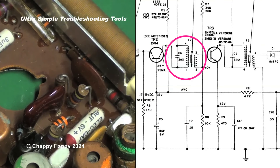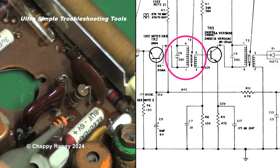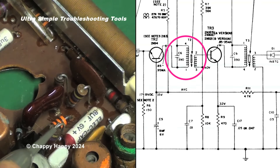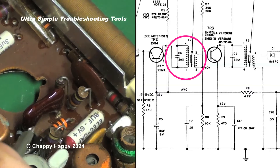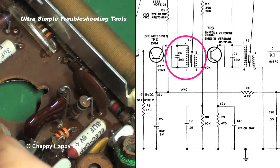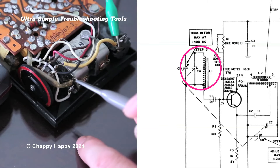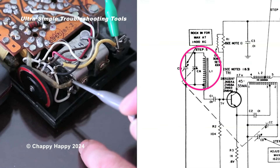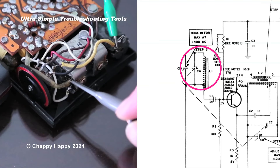How about the AF stage? I can hear the sound — the AF stage is also working. How about the RF stage? No sound. It seems to be a problem here.